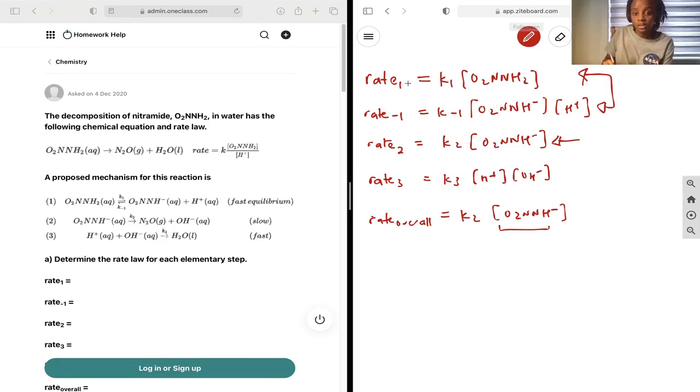And so we know rate 1 is equal to rate minus 1 because they're in equilibrium, and so k1 O2NNH2 is equal to k minus 1 O2NNH minus H plus.